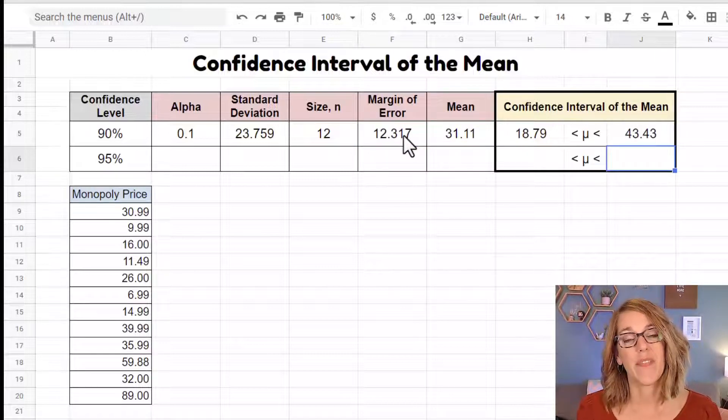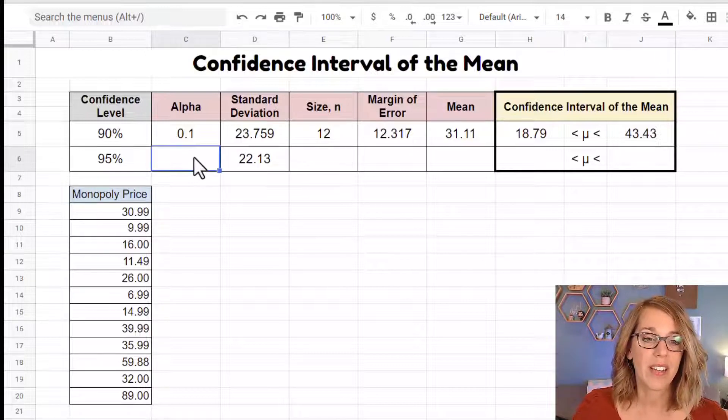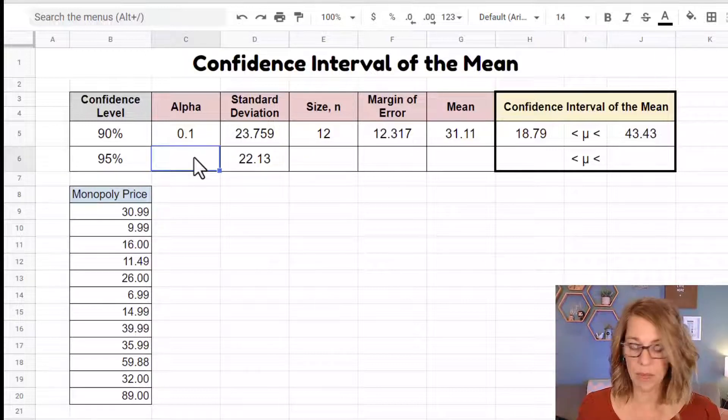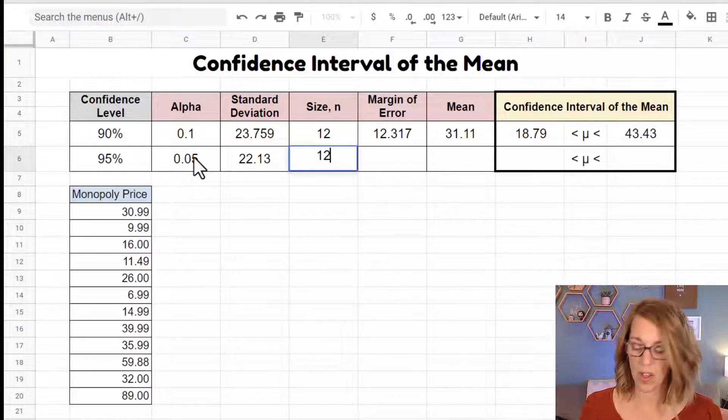Next, we're going to do a 95% confidence interval, but this time we have a given population standard deviation of 22.13. Not a lot is different here. I can do one minus my confidence level to get to my alpha. My sample size is still 12.